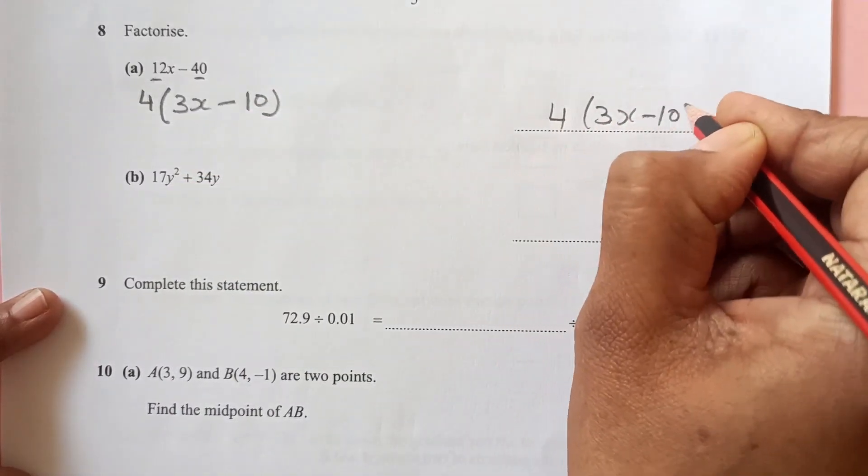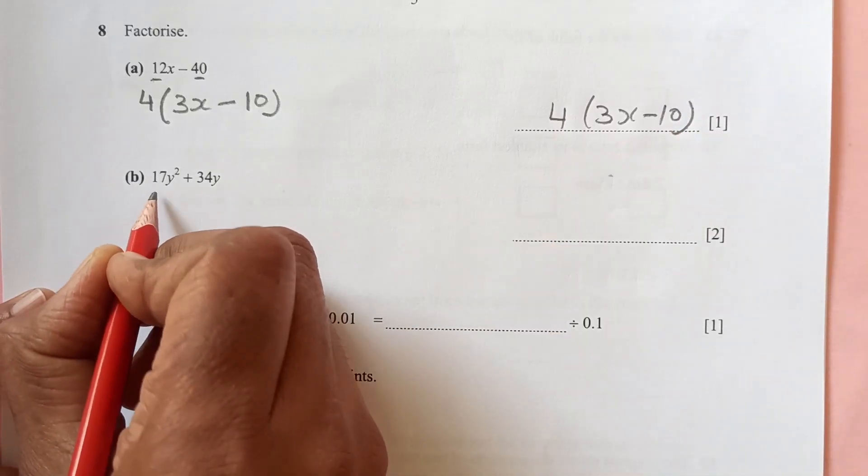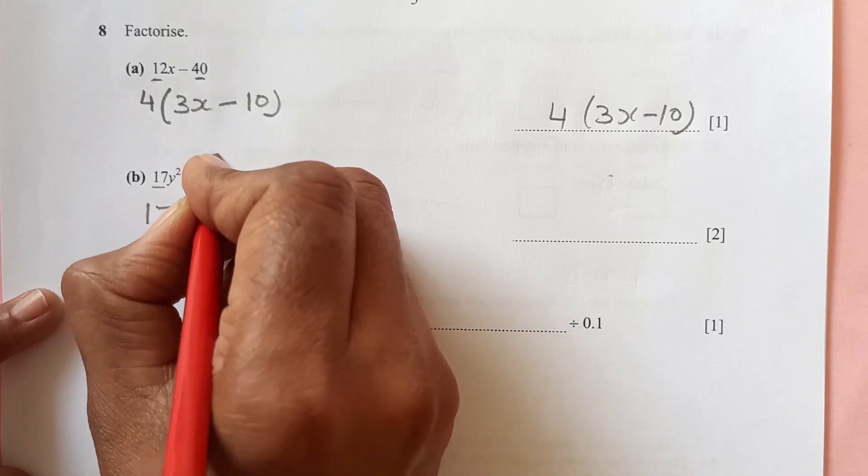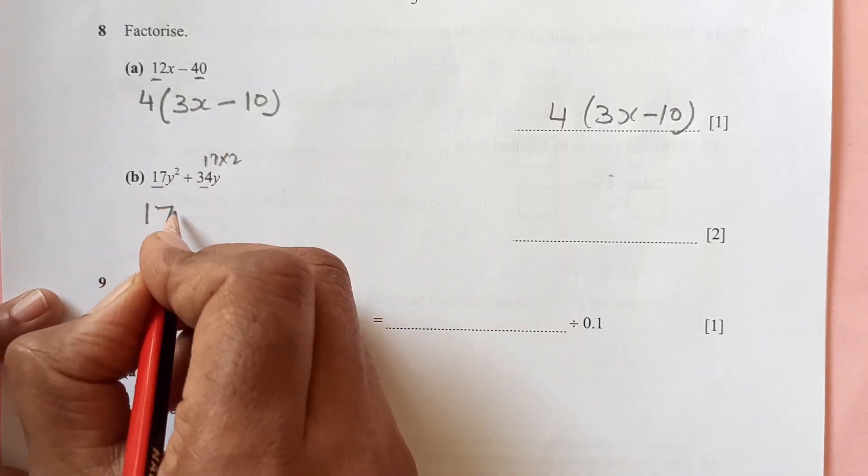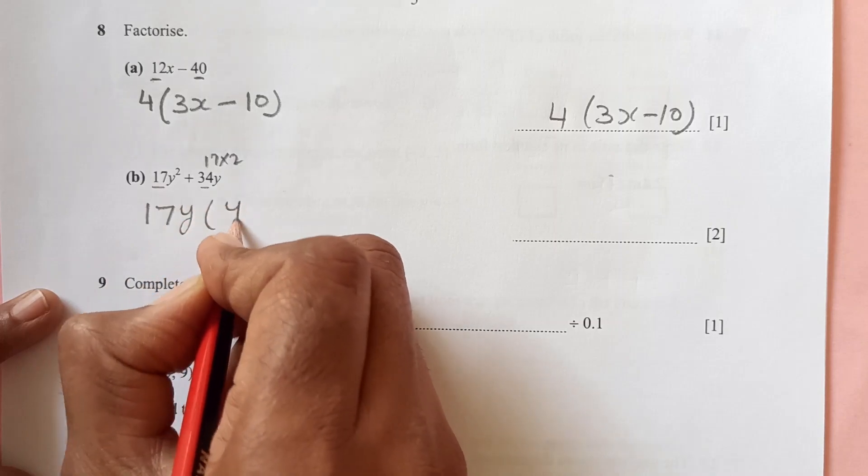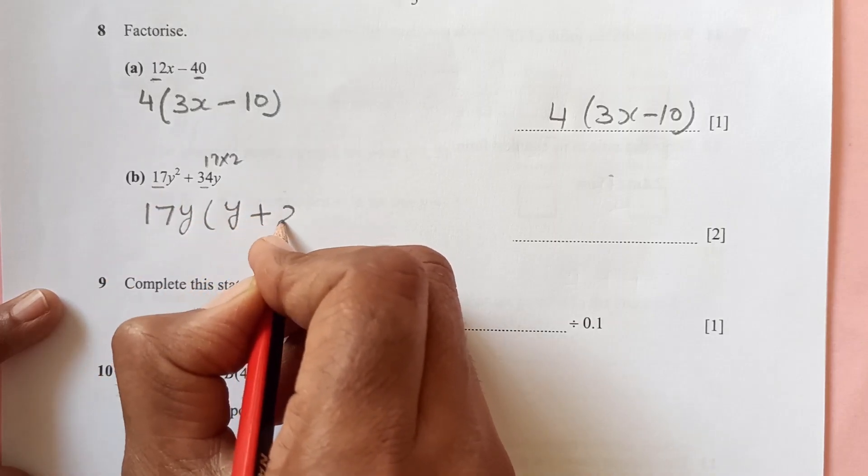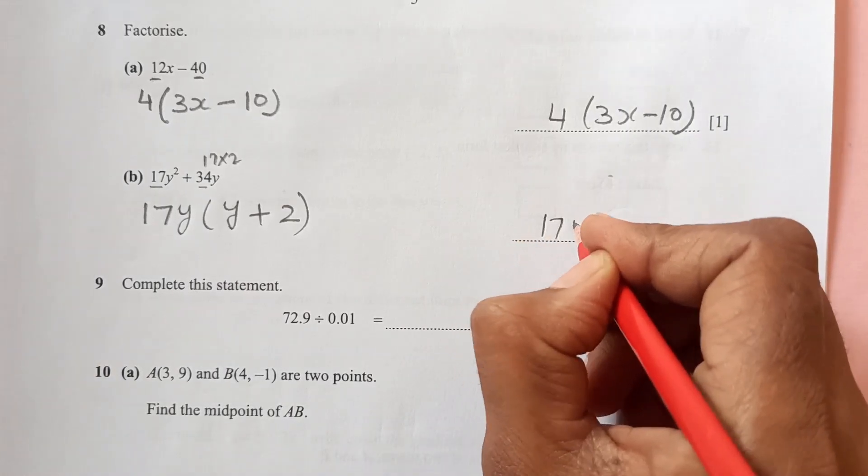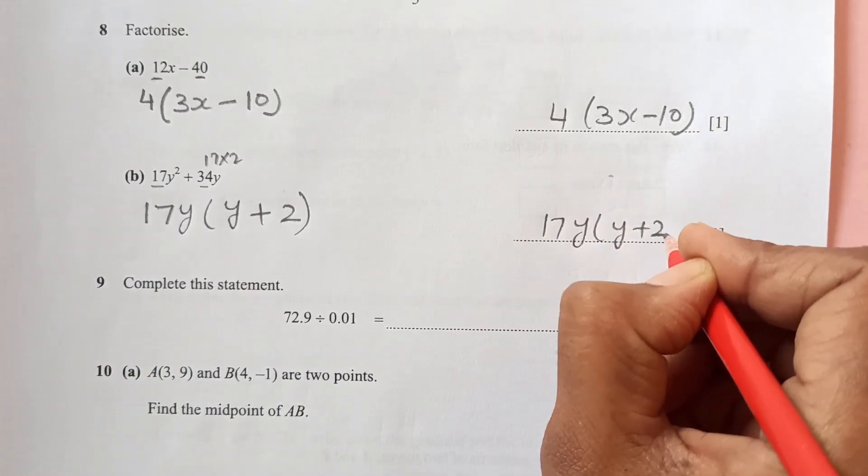Factorize this also: 17 and 34. 17 is common because 17 times 2 is 34, and y is common, so y remains inside plus 2. So that is going to be 17y times y plus 2.